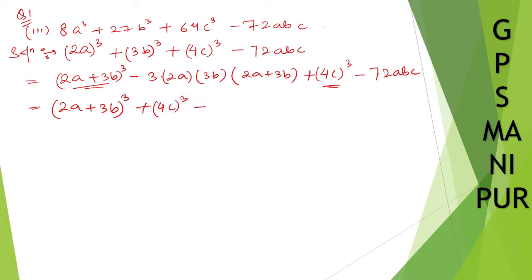And next you write down 3 times 6, 6 times 3 is 18, 18ab and multiply with 2a plus 3b minus 72abc.